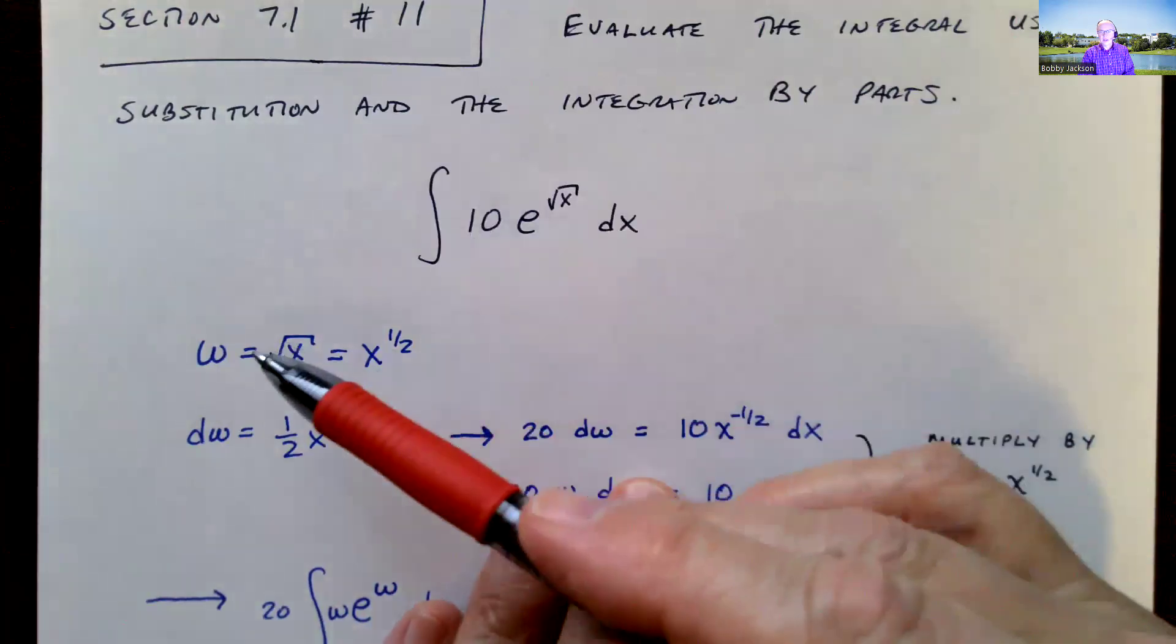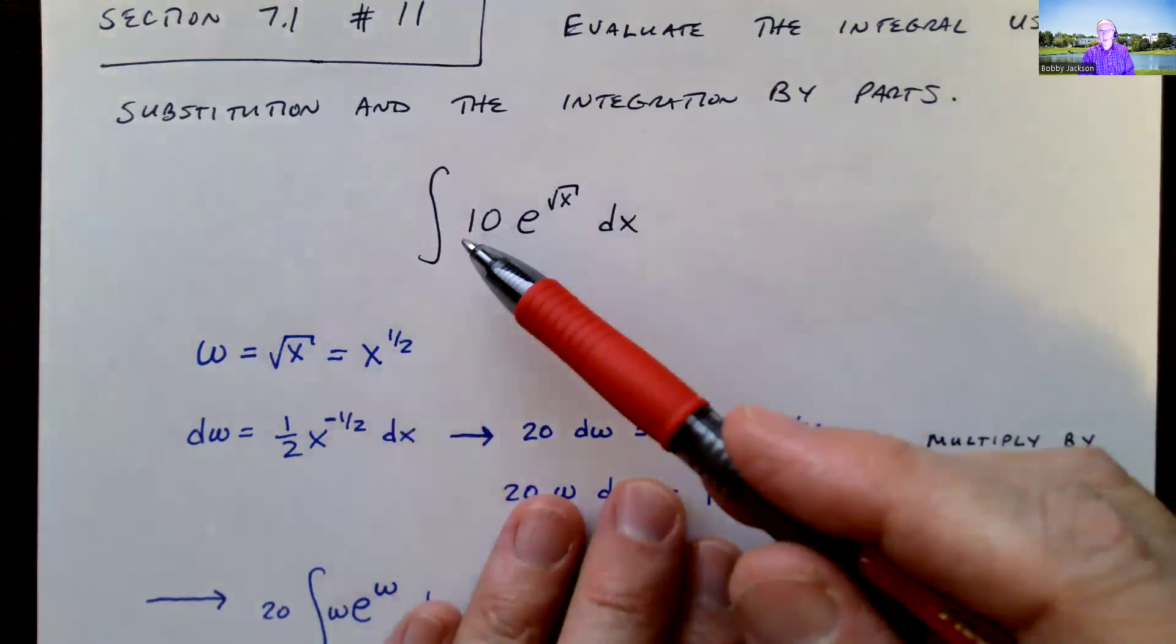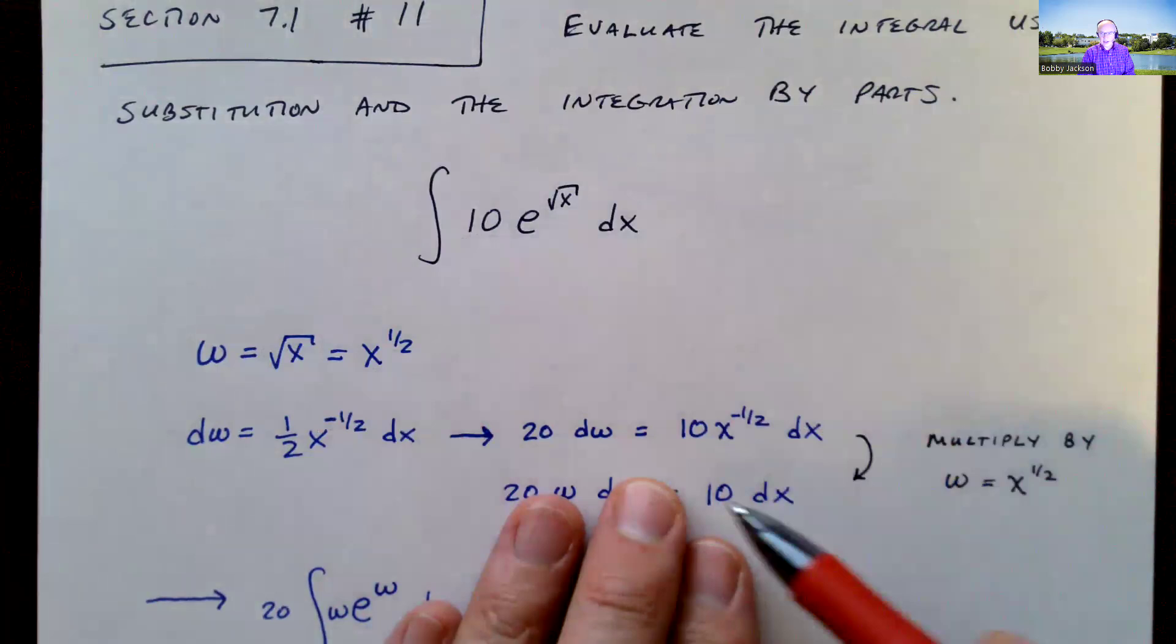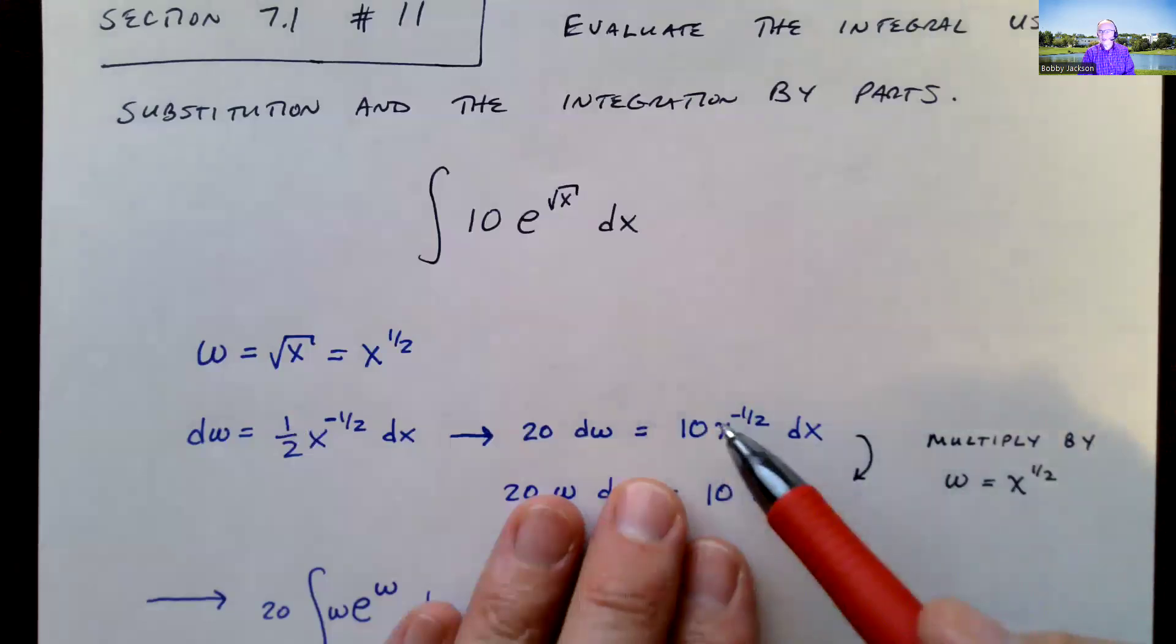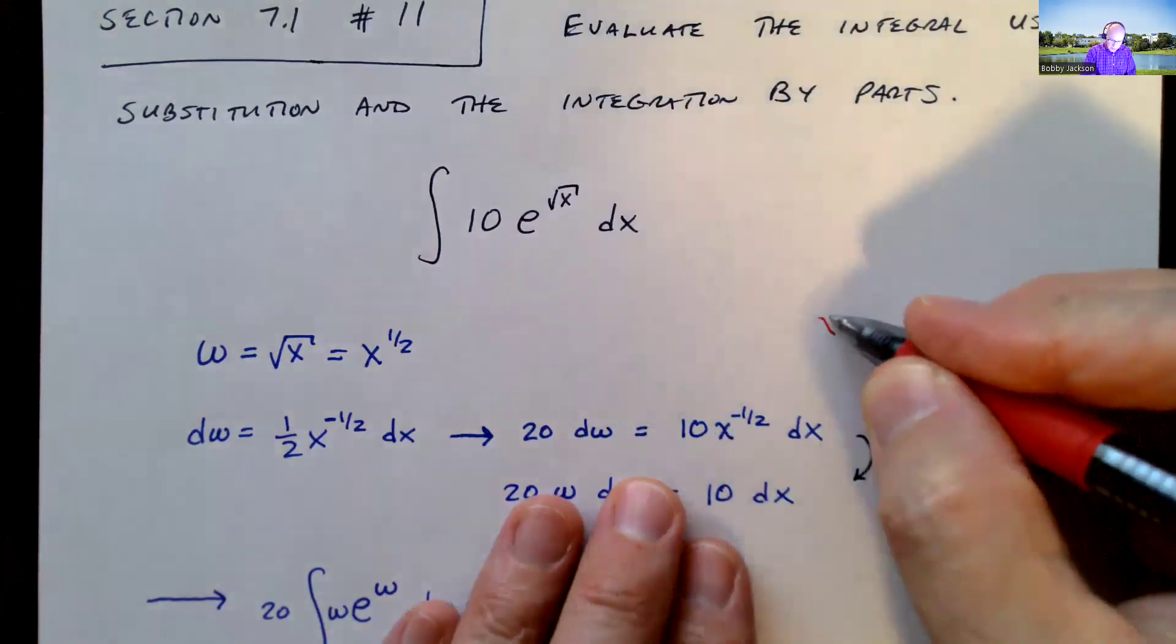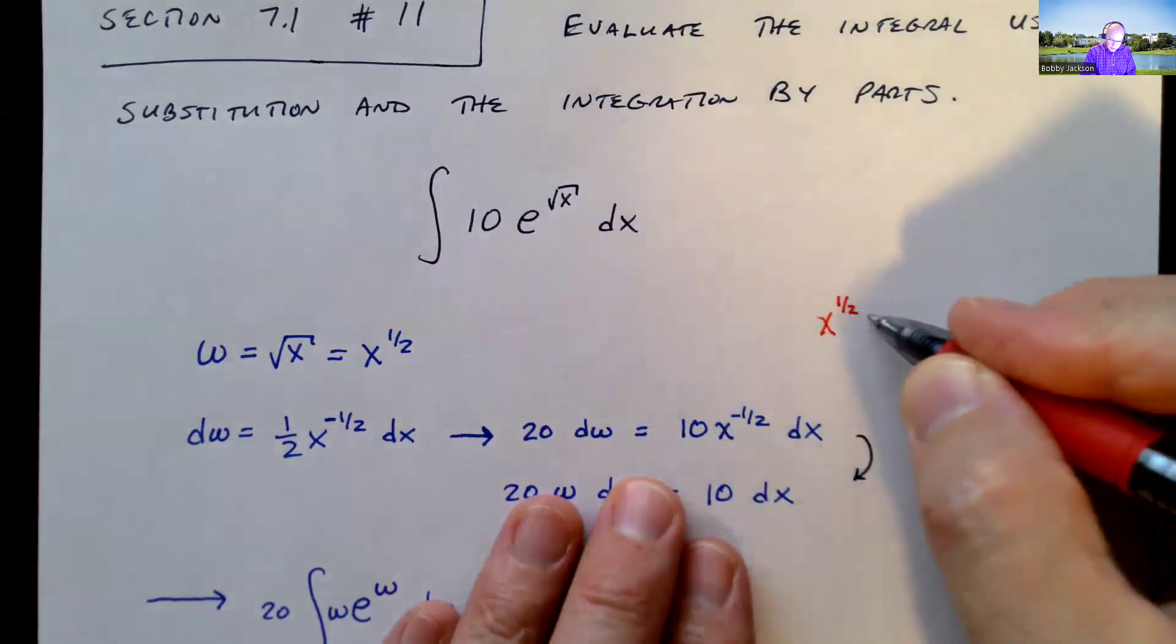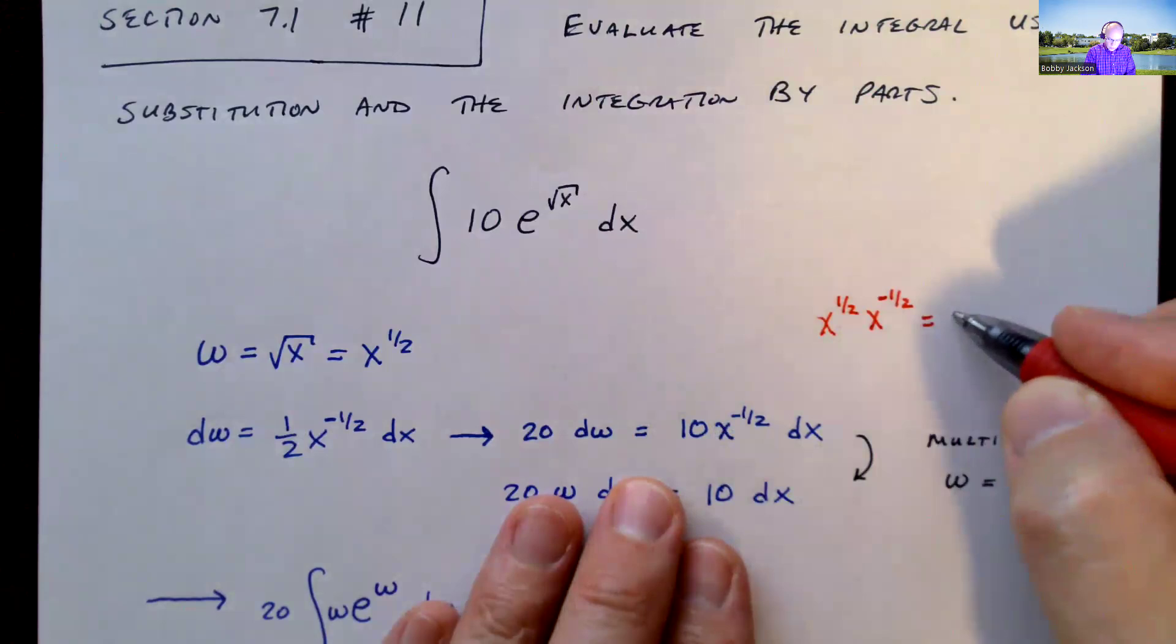20 dw will give me 10x to the negative one-half dx. And I'm all set. It seems like I've got e to the w, but what's left is 10 dx. And I've got a 10x to the negative one-half. Well, if I multiply both sides of this equation by x to the one-half, of course,